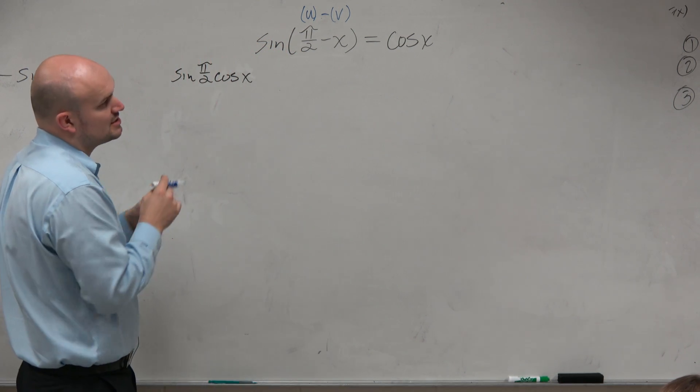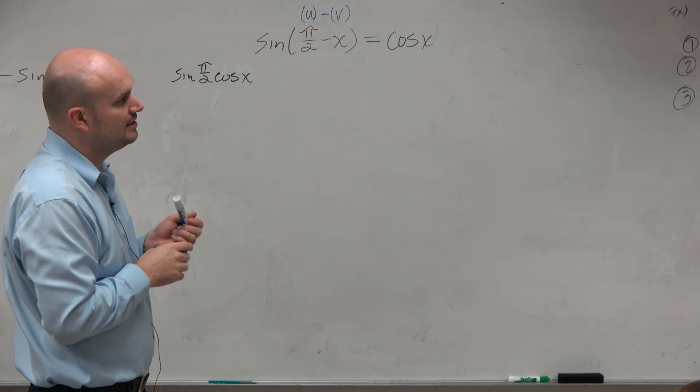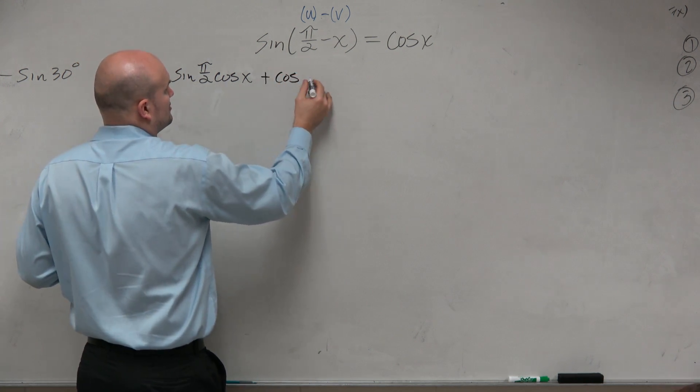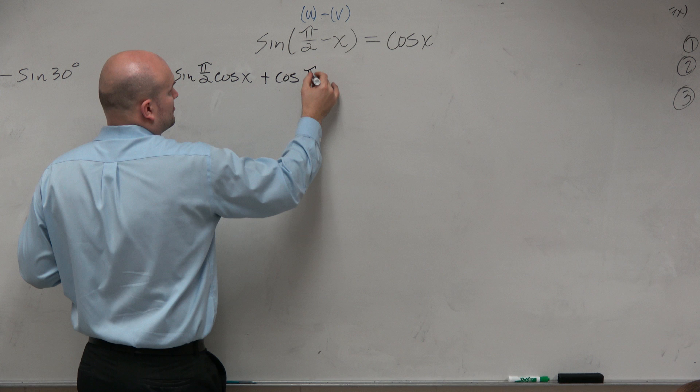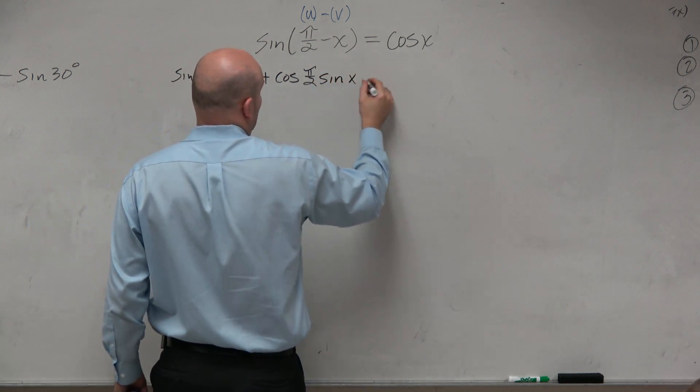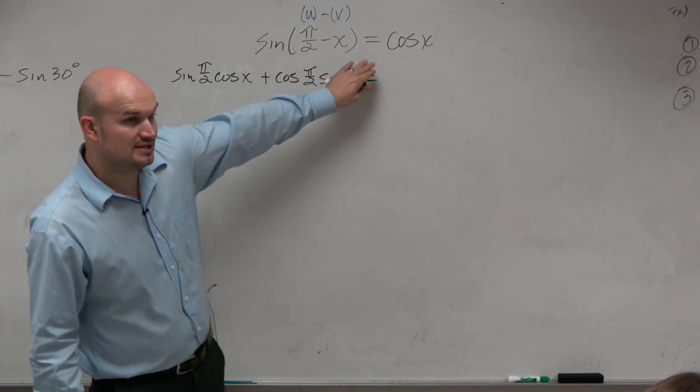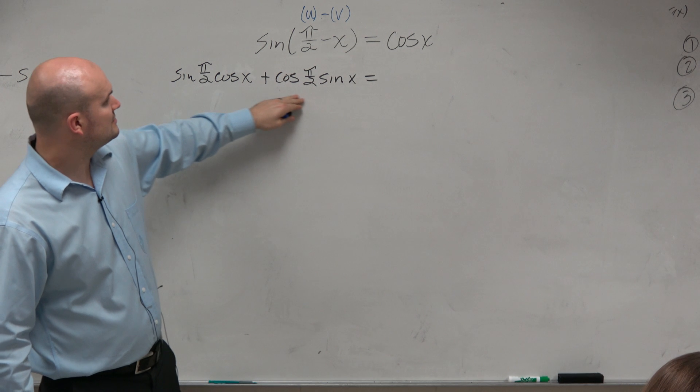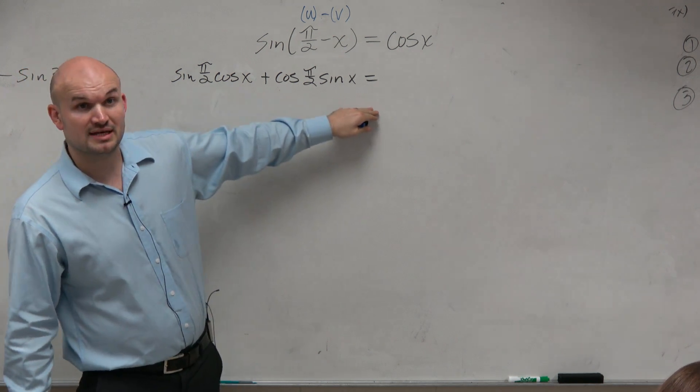The plus or minus is just telling me which formula I'm going to use. Then I have plus cosine of u, which is pi over 2, times the sine of v, which is x. So what I did is I took this side and rewrote it using the difference formula for sine.